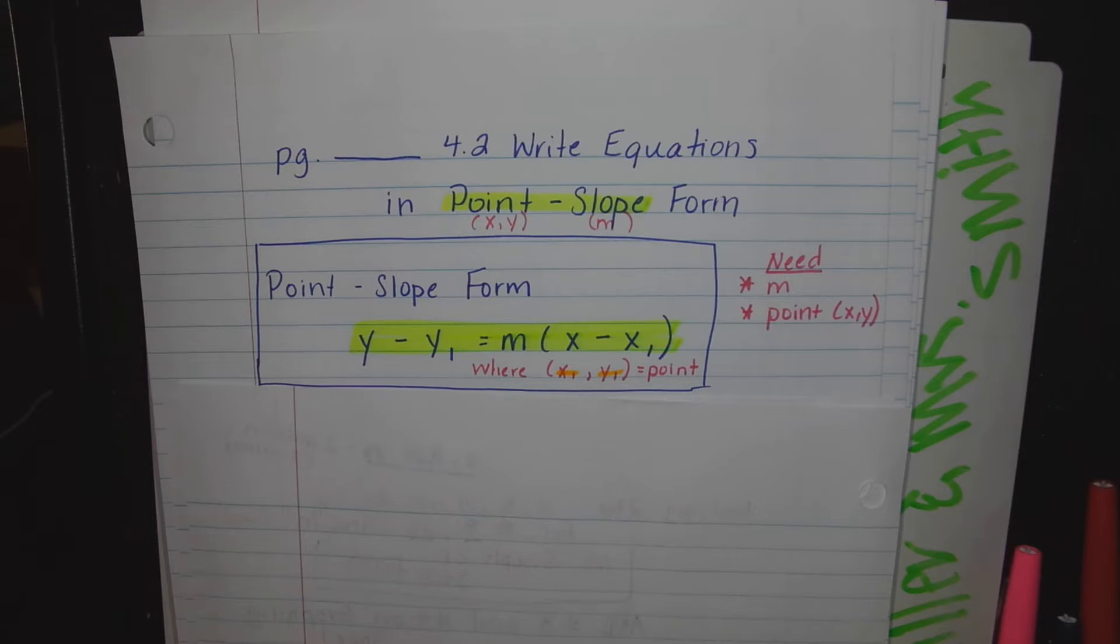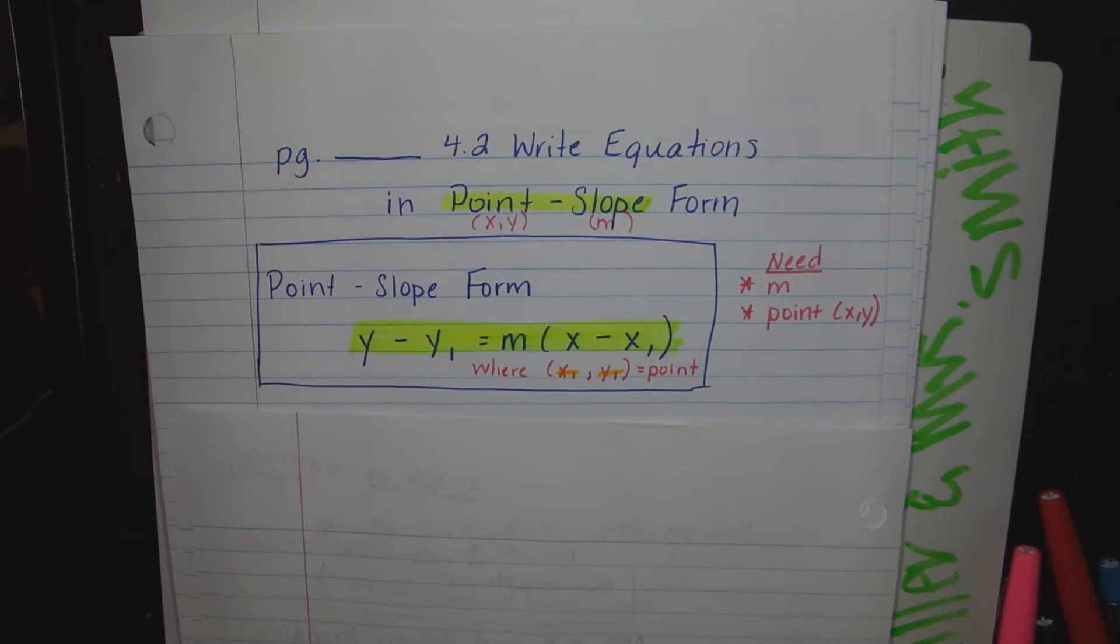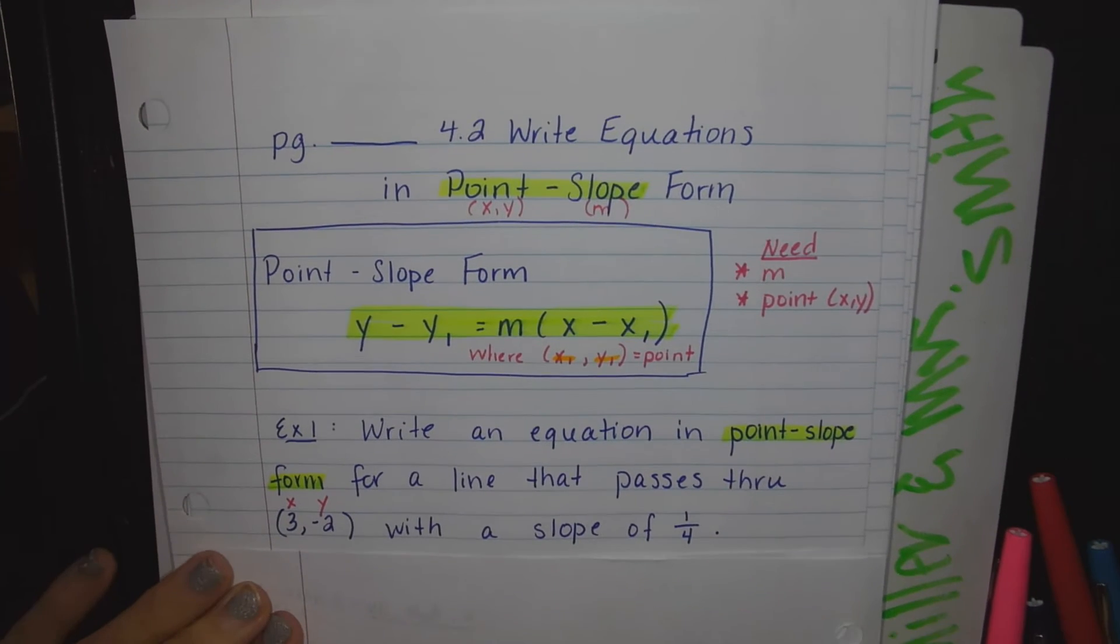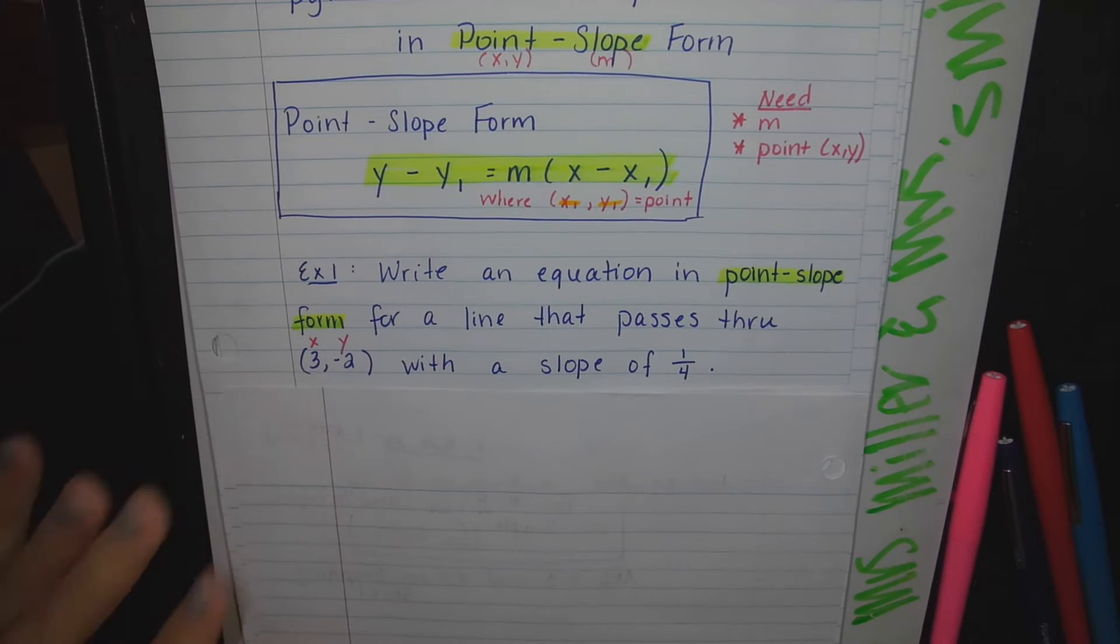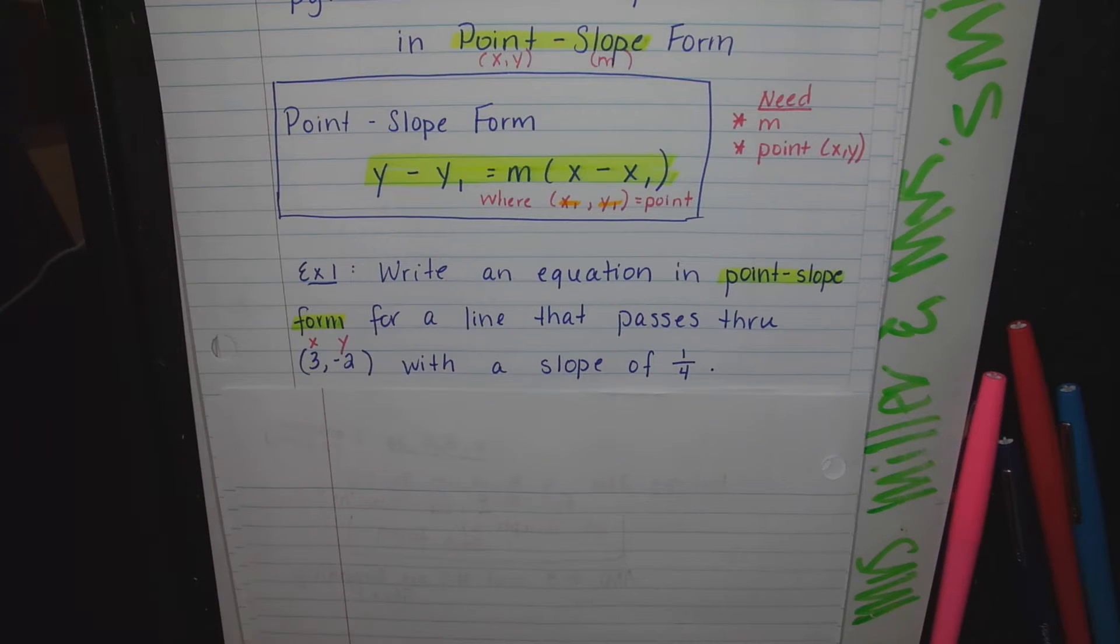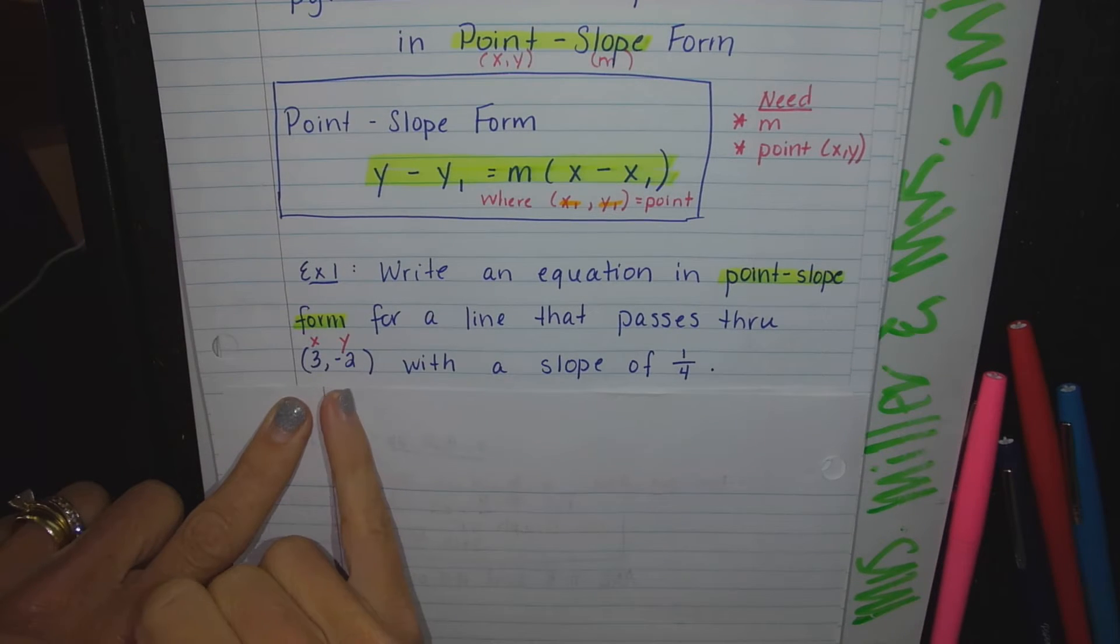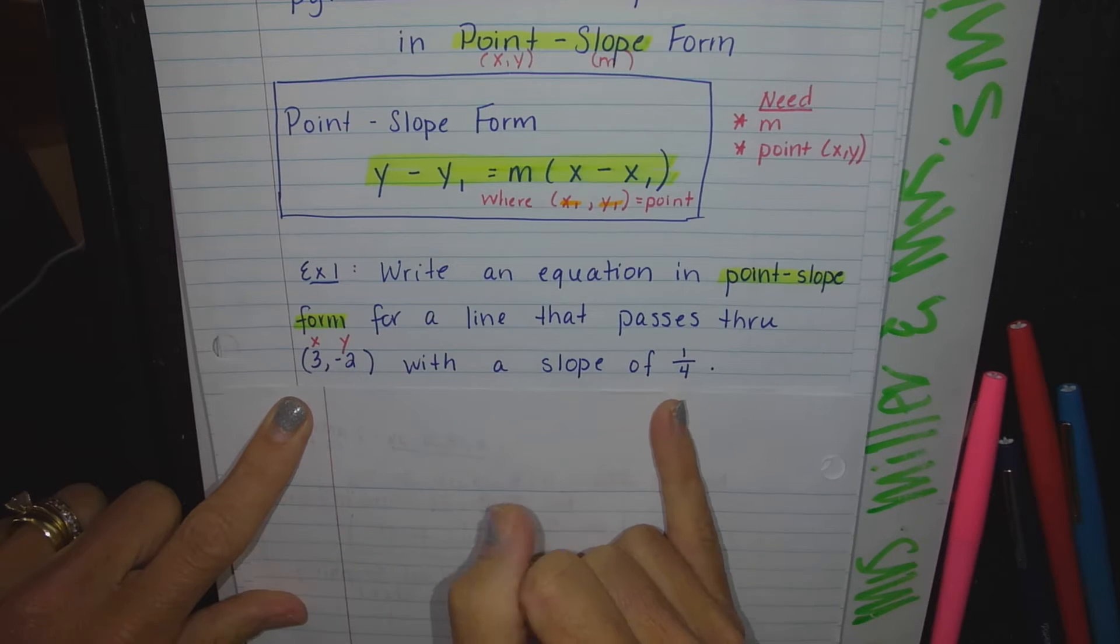This is basically just a continuation and review of what we did yesterday. Let's do an example. Write an equation in point-slope form for a line that passes through the point (3, -2) with a slope of 1/4. Just a reminder, fractions aren't bad - rise over run, they're actually good.